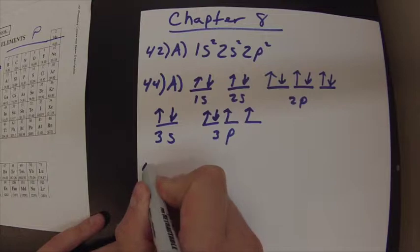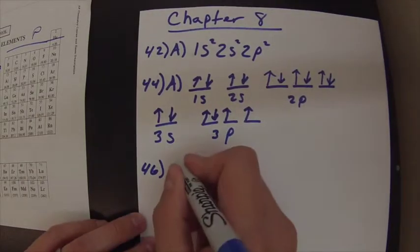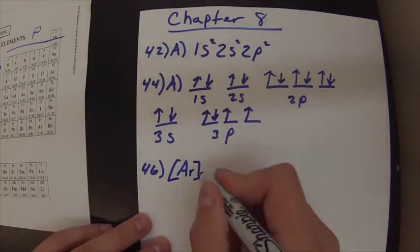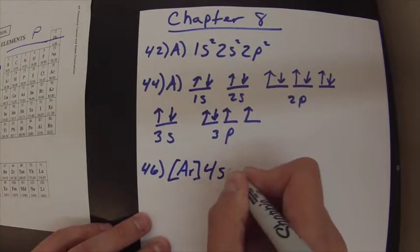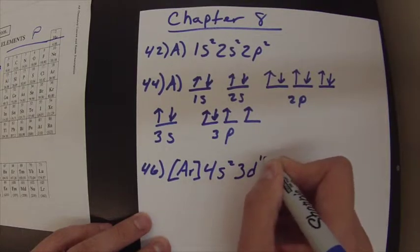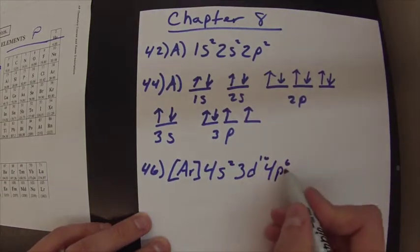Alright, next up is 46. 46 says to look at the electron configuration to determine the element. Alright, and the electron configuration it gives us is the electron configuration of argon plus 4S2, 3D10, 4P6.